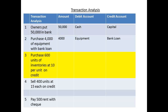Our third transaction was to purchase 600 units of inventories at £10 per unit, the purchase being a credit purchase. The amount is 600 times 10, which is £6,000. We shall debit the asset account of inventories — the units represent inventory which we are hoping to sell and are an asset until sold, so we are increasing the asset of inventories. We still owe the money, so we shall credit the liability account of trade payable.